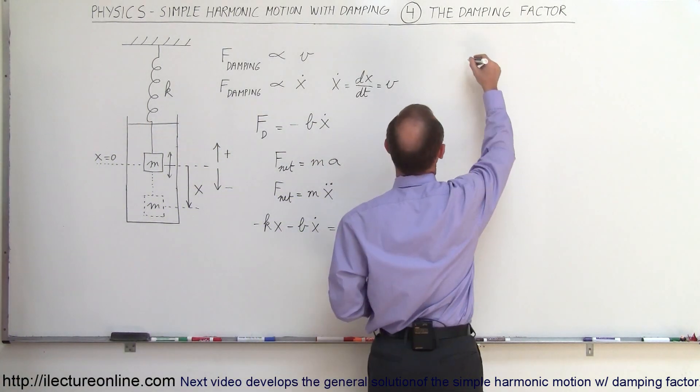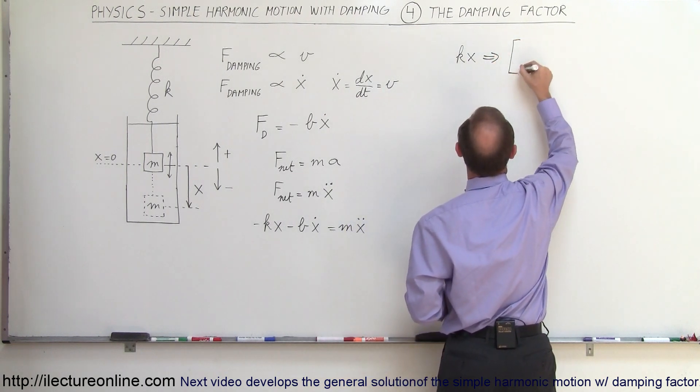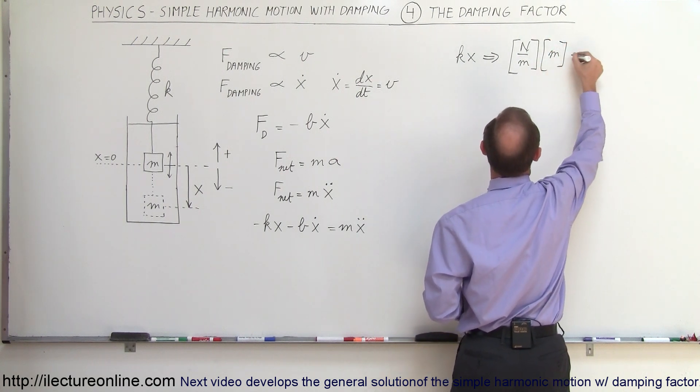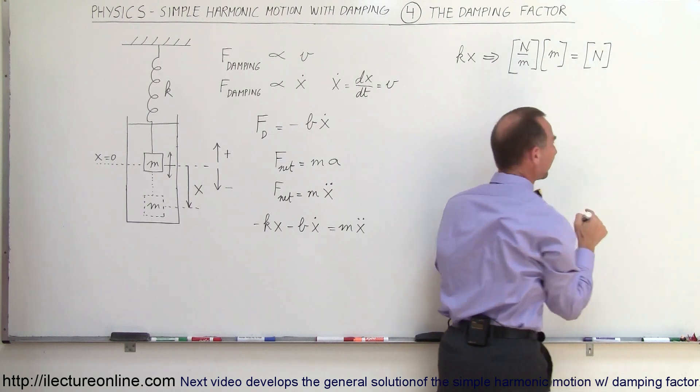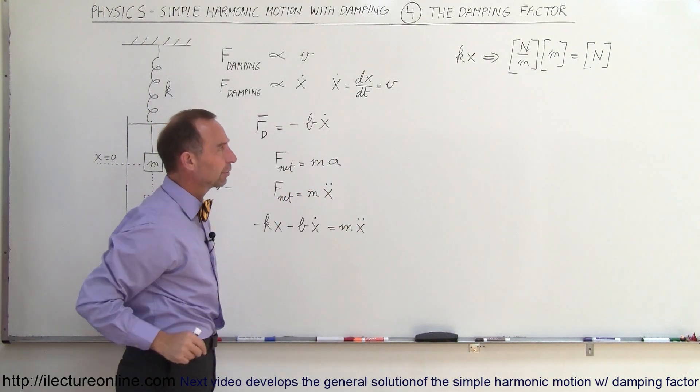Starting with kx as an example, if you look at kx, the units for kx would be, k would be Newtons per meter, and x would be meter. So when we multiply these together, we get the units of Newton. When I put little brackets around it, that's my way of expressing those are the units of that particular expression.